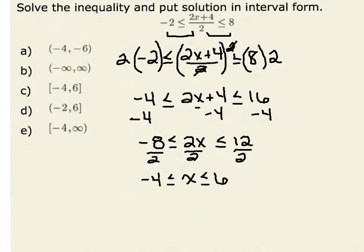Writing this in interval notation, x is between negative 4 and 6, including those endpoints. Therefore, I use brackets and write it as negative 4 to 6.